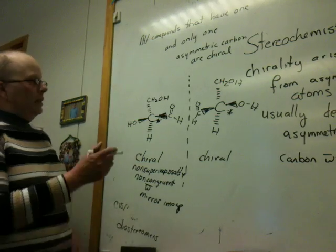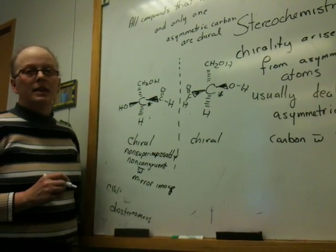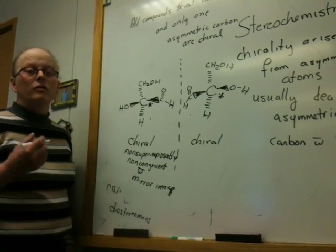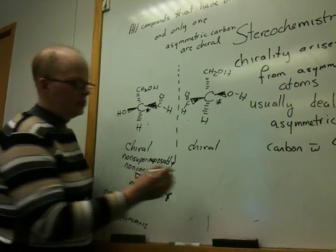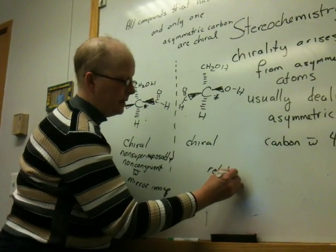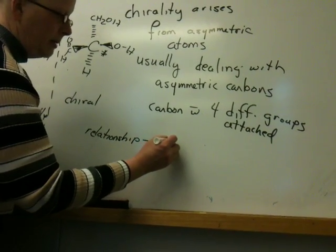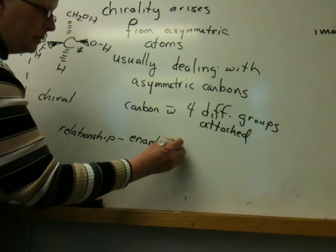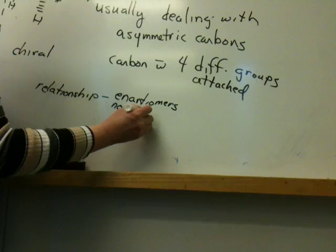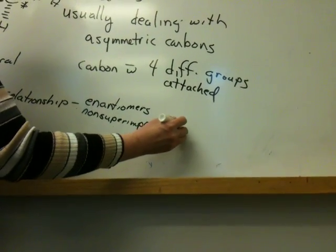What this means is that these two molecules are different from one another. They're not the same molecule because they're not superimposable. And to interconvert them we have to break bonds so they're different. What is their relationship? They have a relationship. Their relationship is that they are enantiomers. And you may have heard this term. They're enantiomers. What are enantiomers? Enantiomers are non-superimposable mirror images.